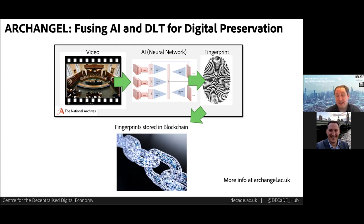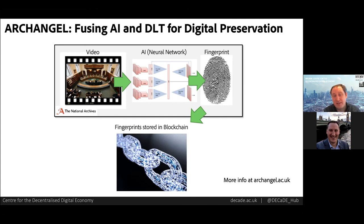We chose a proof of authority DLT — we used Ethereum for public readability, but only wanted this federation of archives to be able to write. We also needed AI, as the archives have a curatorial duty to format-shift content to keep it updated with current technologies so people can always view the content. Over time, a piece of video might be transcoded into new formats multiple times. So when doing digital fingerprinting, we can't use hashing methods like SHA-256 — a bitwise hash — because it'll change every time the bits change. What we need is a visual fingerprint that's invariant to these kinds of benign transformations. So we trained a neural network, a computer vision system, to do that and stored these AI-derived fingerprints in the DLT. You can read more about it at the Archangel project website.